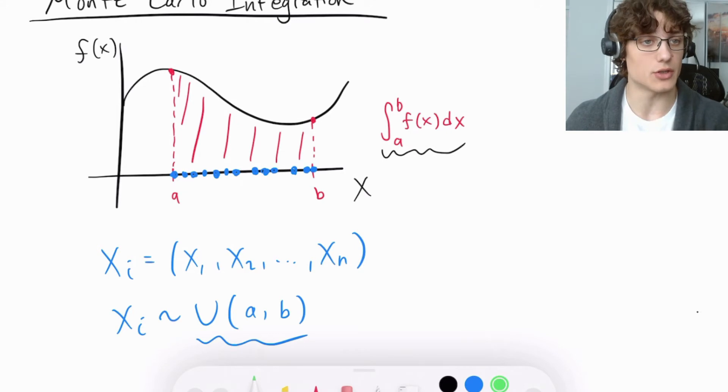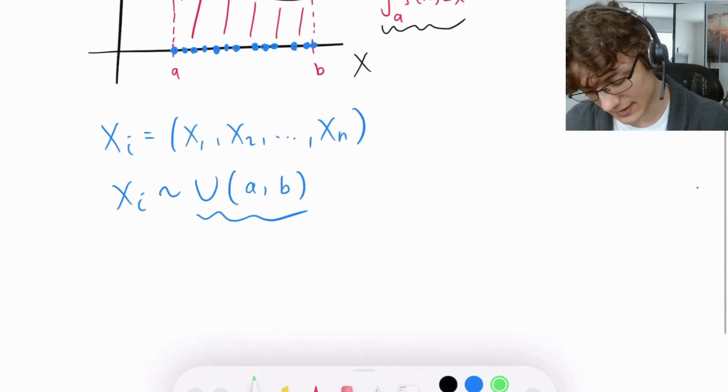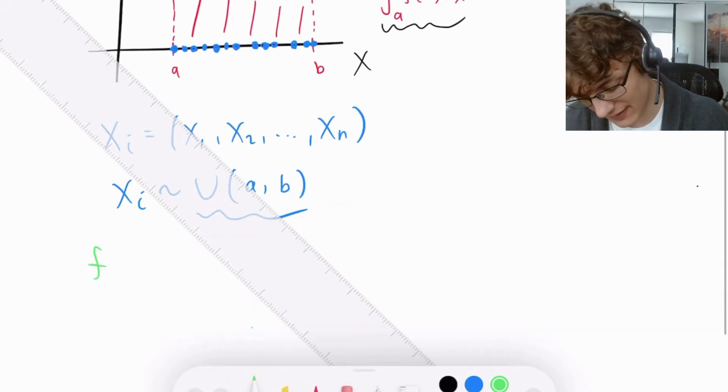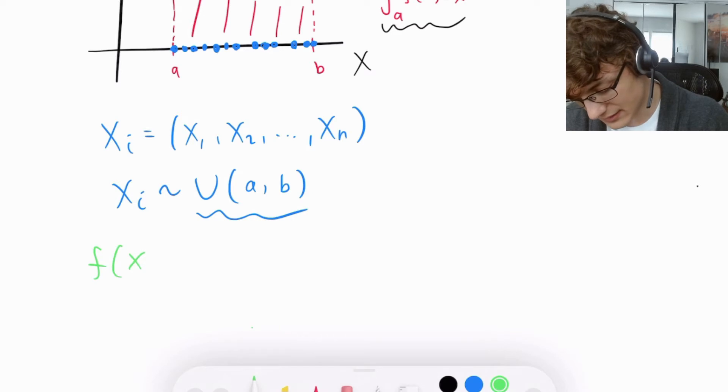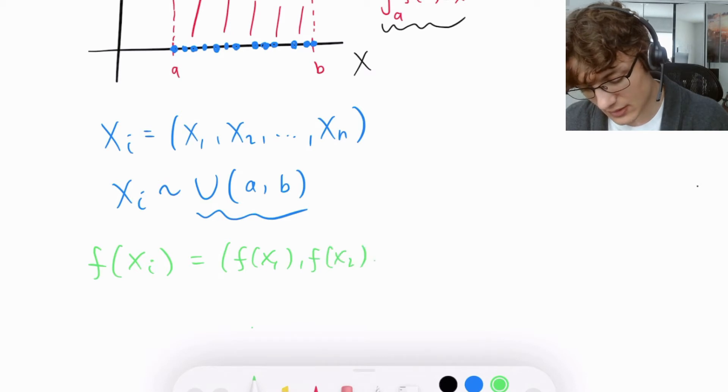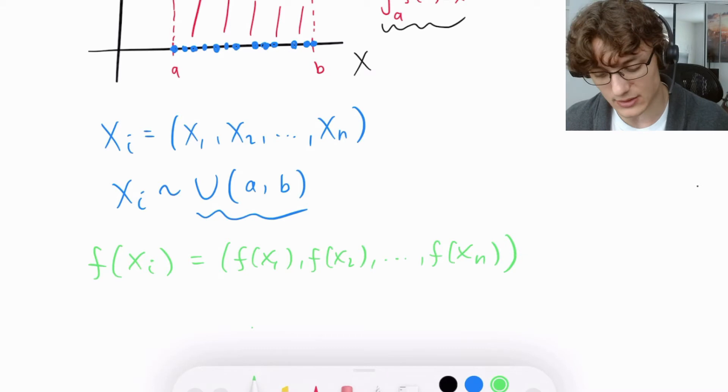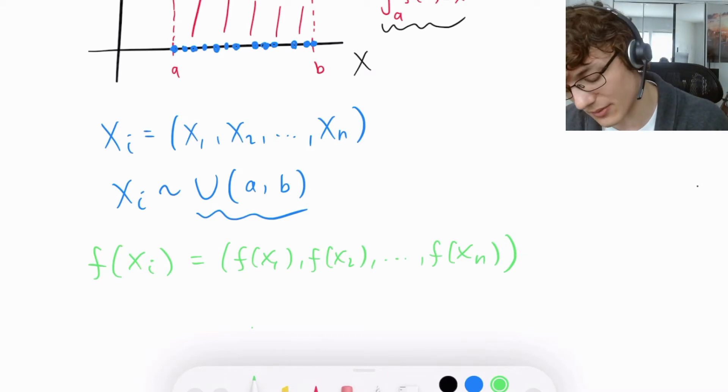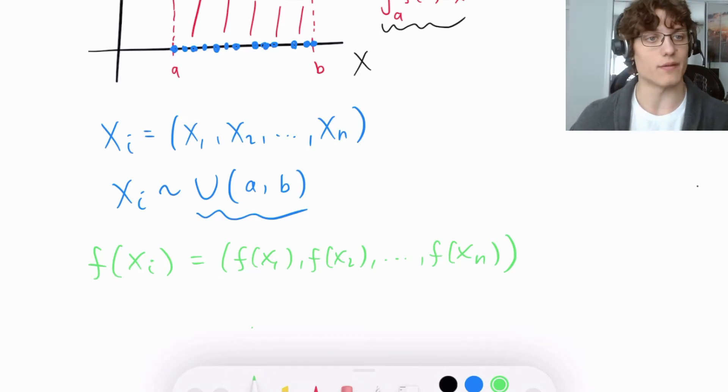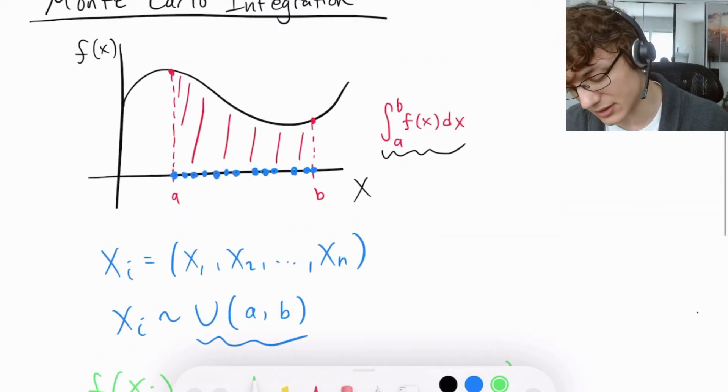Given that we know the function f(x), we can find its value for each of these randomly sampled points. So what we end up with is a collection of f(x)'s. f(Xi) = (f(X1), f(X2), ..., f(Xn)), where n is the total number of points we sample from a to b.